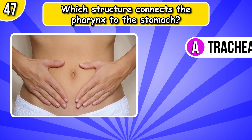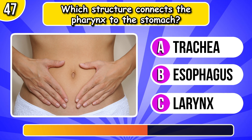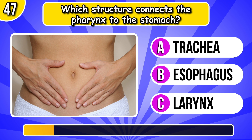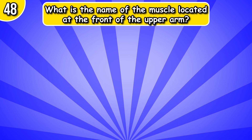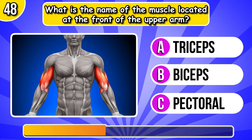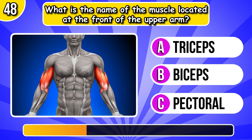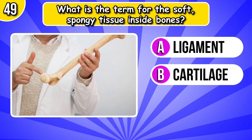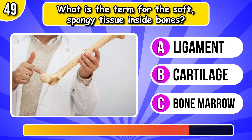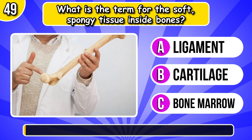Which structure connects the pharynx to the stomach? What is the name of the muscle located at the front of the upper arm? It's biceps. What is the term for the soft spongy tissue inside bones? It's bone marrow.